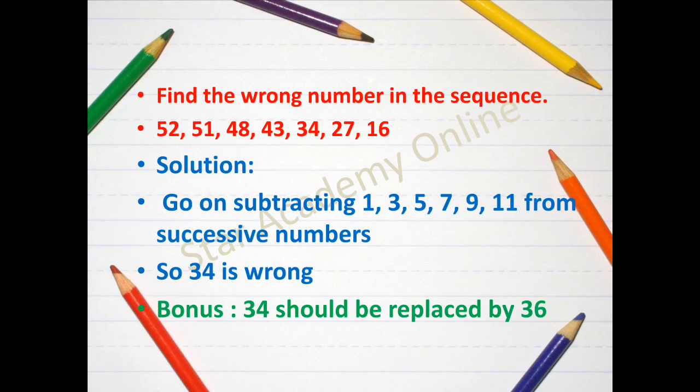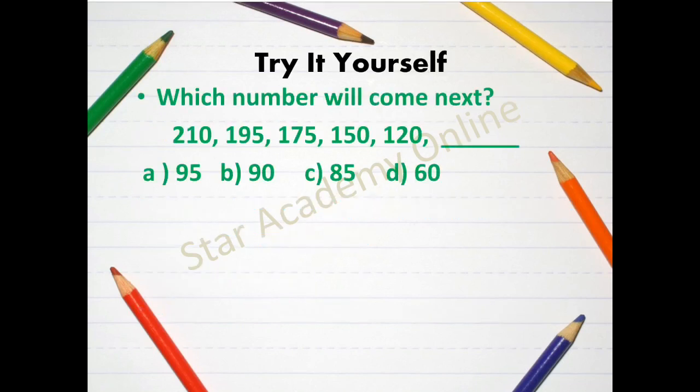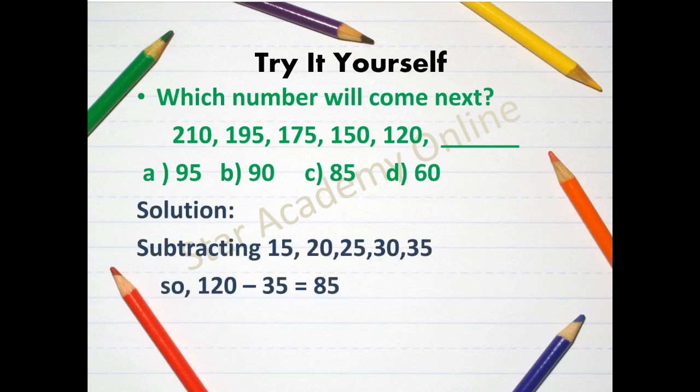So after 43 it should be 36 and not 34. Now try it yourself which number will come next. 210, 195, 175, 150, 120 dash. Now what do you think? Which number is going to fill in that space? Here are the given options and here is the solution to it.